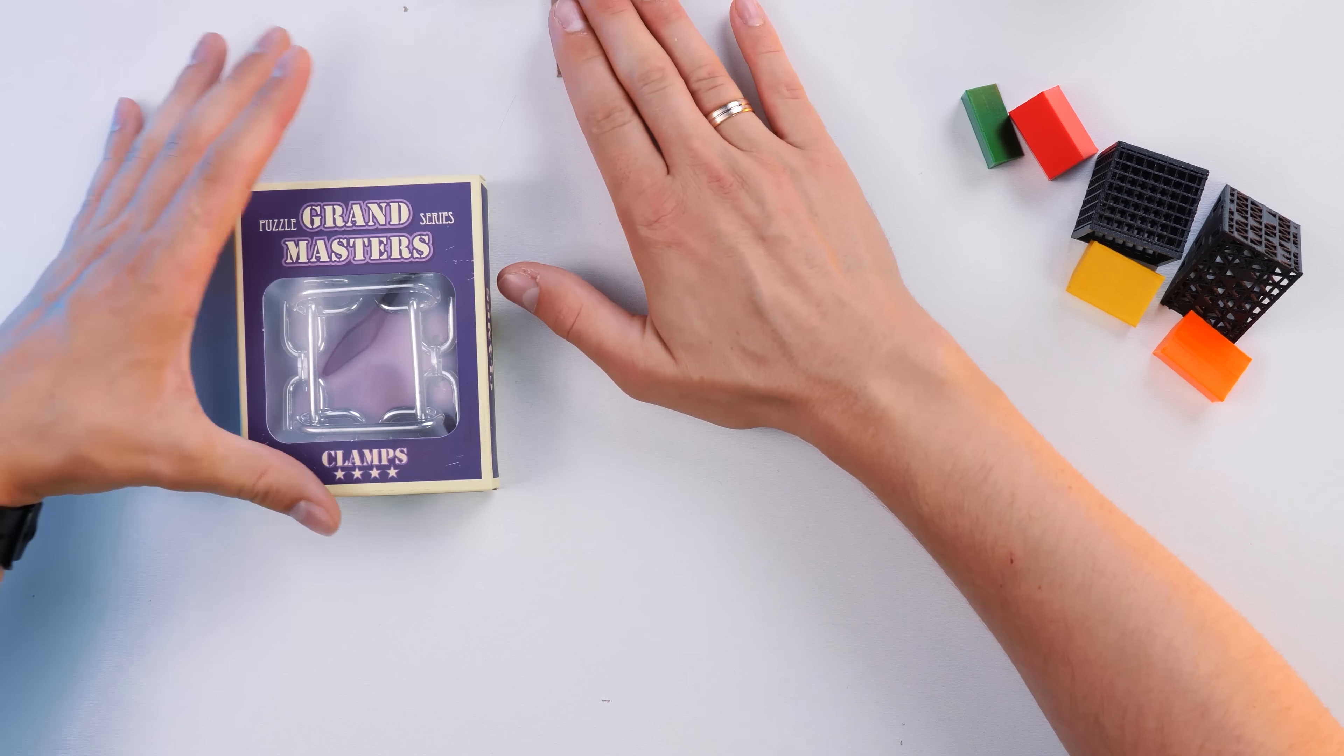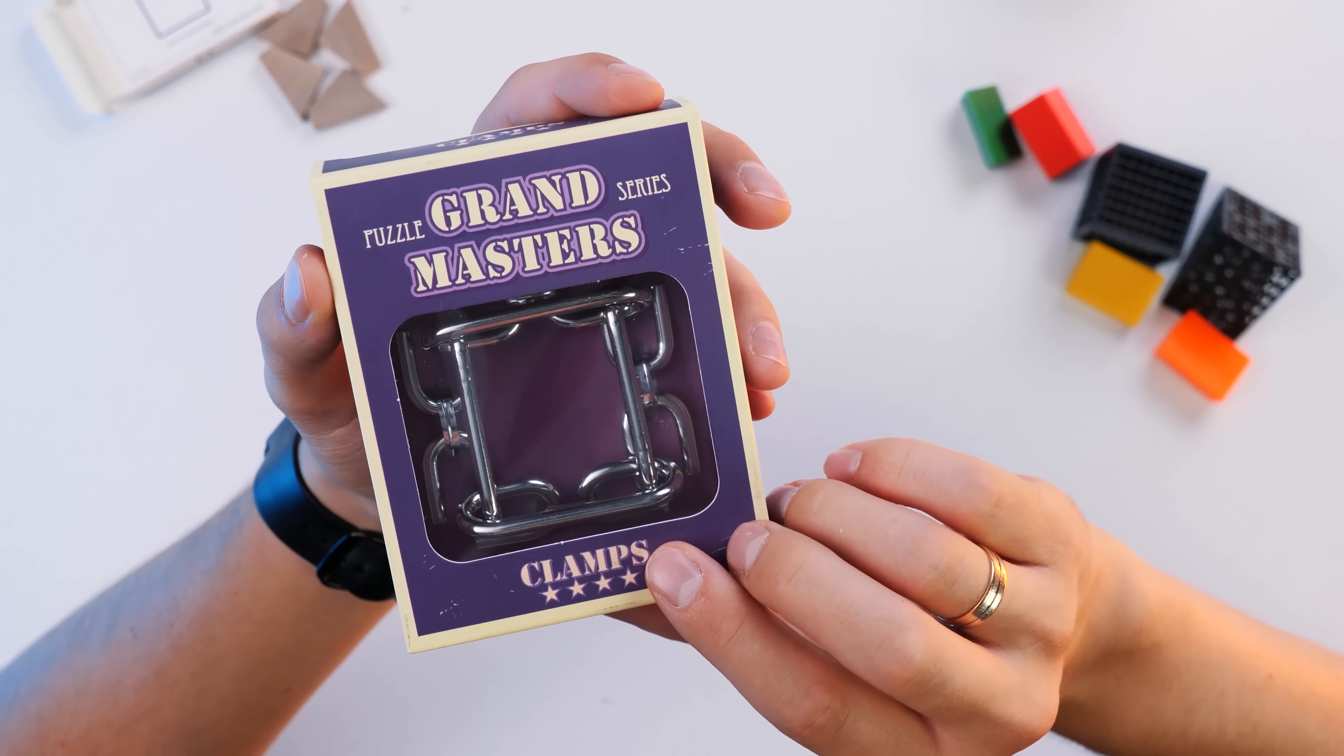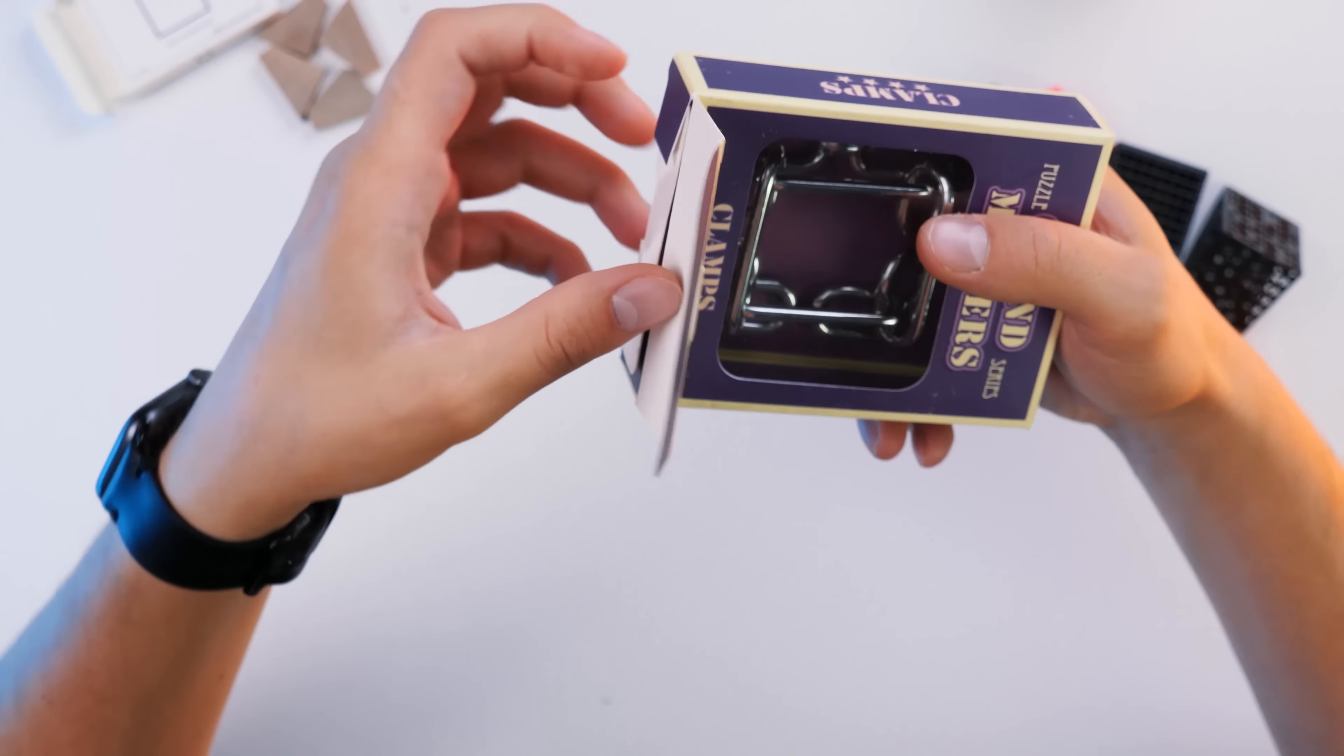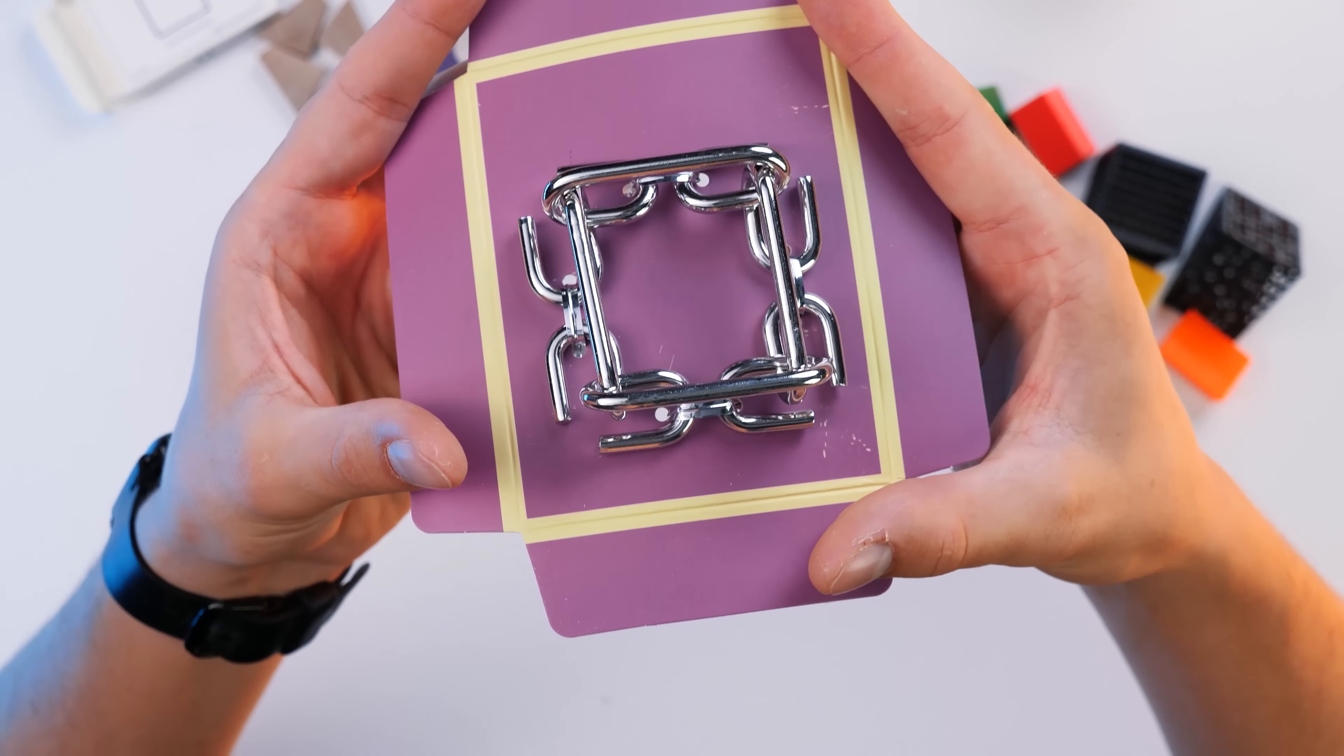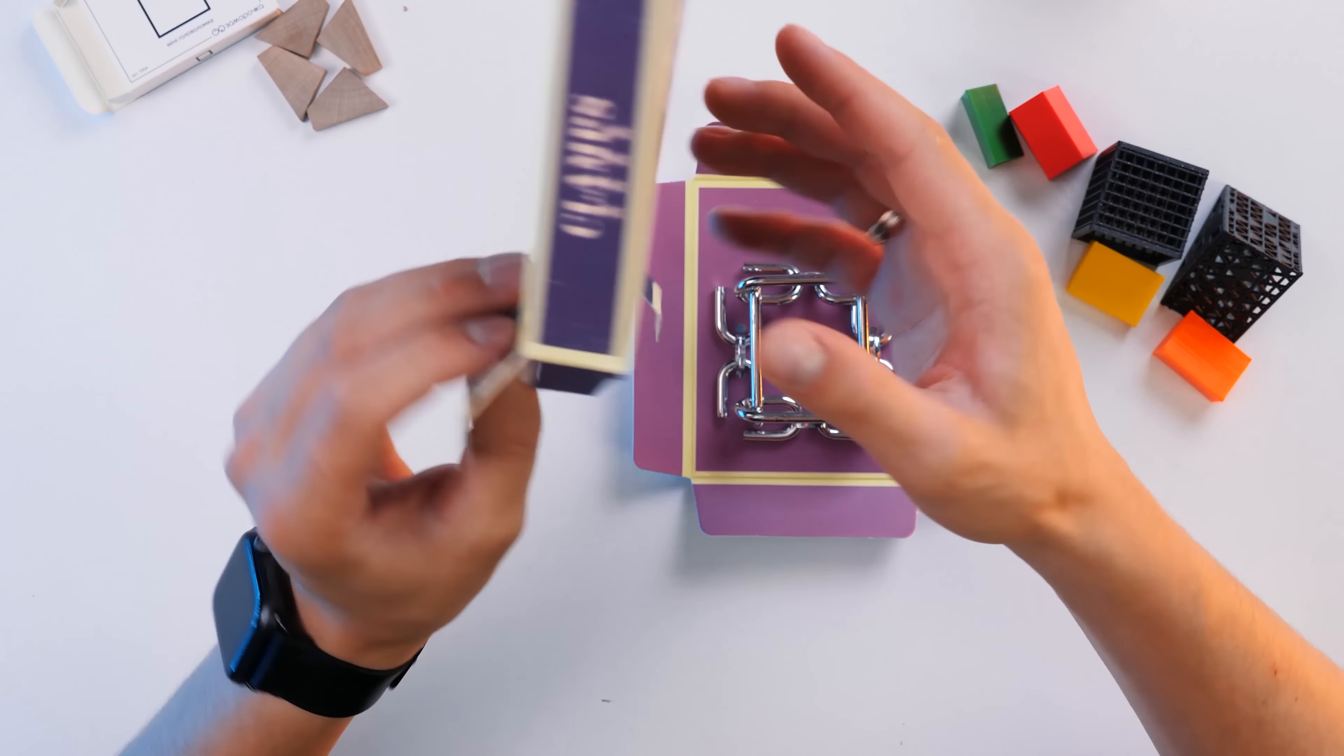Next, I propose to go to this bright purple package, where it is written the Grand Master puzzle series. That is, something promising, let's unpack. Well, it's packed cool, and it's quite heavy. The metal puzzle, which also consists of four identical details. But what is its complexity? Let's see.